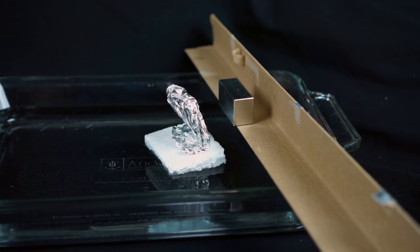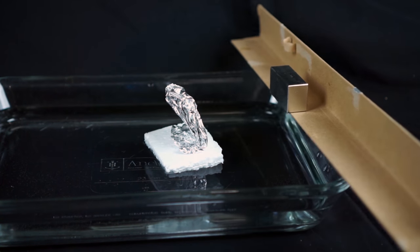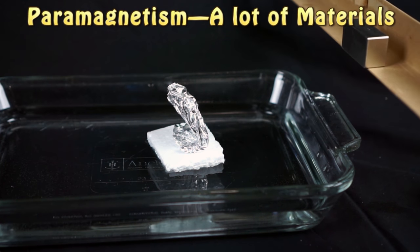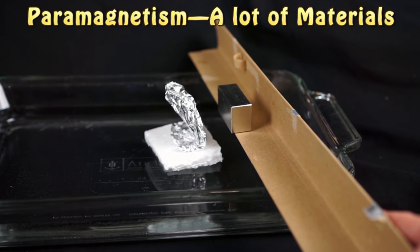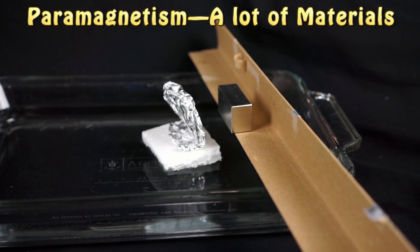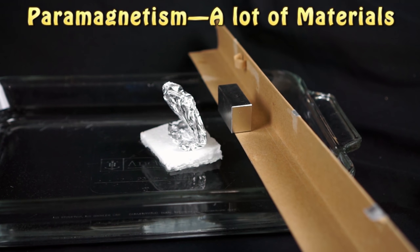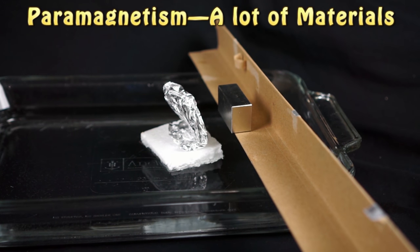And then a few materials like aluminum are paramagnetic. And paramagnetic means it's attracted to magnets. So now if I just bring my magnet near the aluminum, the aluminum will go towards it. So this is paramagnetism and it's really weak.